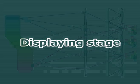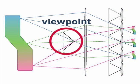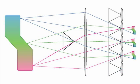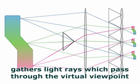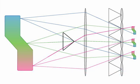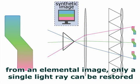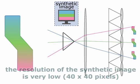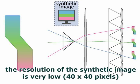Next is the displaying stage. LEAFLIT can synthesize free viewpoint images interactively. This system gathers light rays which pass through the virtual viewpoint. Unfortunately, from an elemental image, only a single light ray can be restored. Consequently, the resolution of the synthetic image is very low.